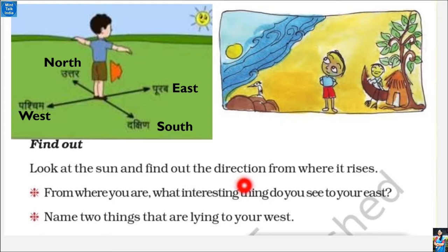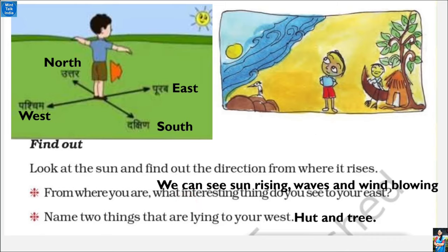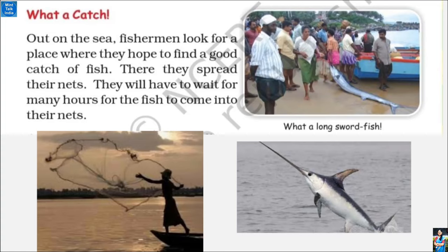If you are standing here, to your east you can see the rising sun, waves, and wind blowing. Name two things lying to your west — we can see a hut and a tree. In the sea, fishermen find many large types of fish.